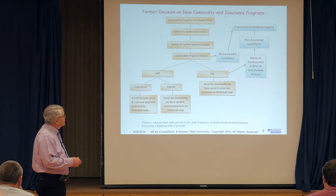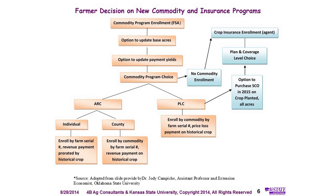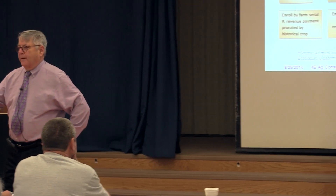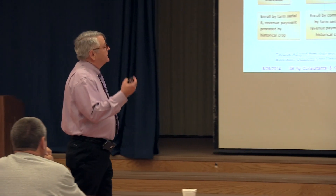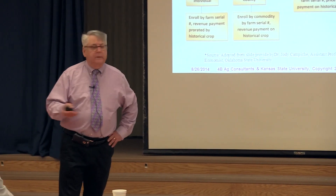If you take PLC, then you're eligible to add on the Supplemental Coverage insurance. This depends on what level of crop insurance you buy. If you buy 80% coverage, there's not much coverage left from the supplemental coverage. If you buy 75% or 70%, there's quite a bit of coverage. The type of crop insurance you buy determines the type of SCO you get — if you buy revenue protection, your SCO is going to be a revenue guarantee with a harvest price in place. If you buy yield-only coverage, your SCO will be a yield guarantee only.